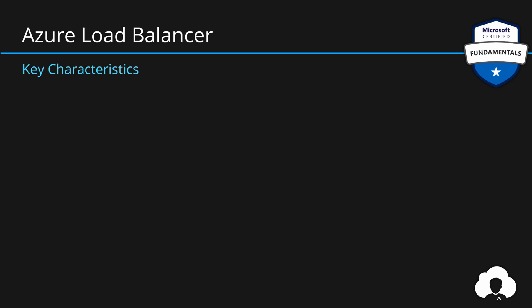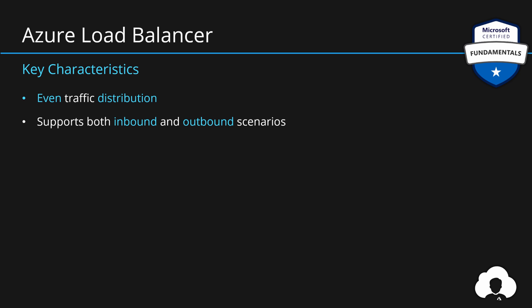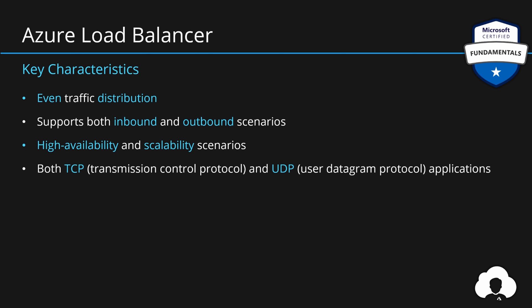To summarize: Azure Load Balancer allows for even traffic distribution across Azure components. It supports both inbound and outbound scenarios — both incoming and outgoing traffic. It is used by customers to provide highly available and highly scalable applications. It supports both TCP and UDP applications, and supports both internal and external traffic with public and internal load balancers.